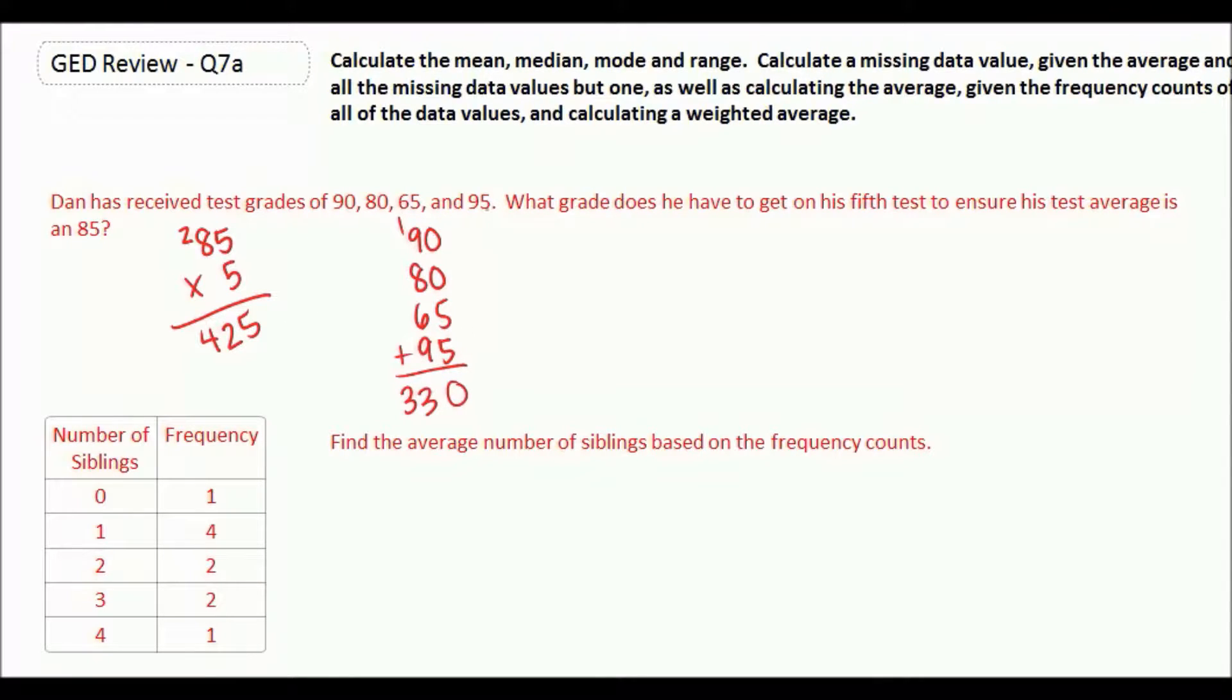We're going to subtract to figure out how many he needs on that last test. We get 95. So Dan needs to get a 95 on his fifth test to make sure his test average is 85.